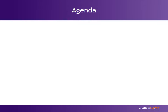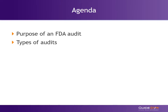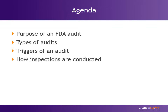During this webinar, we'll take some time to talk about the purpose of an FDA audit, the types of FDA audits, and what might trigger an audit. We'll cover how a typical inspection is conducted and what some of the common findings are. Finally, we will discuss the best next steps to take after the audit based on the FDA findings.